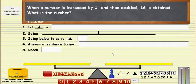When a number is increased by 1 and then doubled, 16 is obtained. What is the number? Let's see how we would solve this using the hands-on equations interactive whiteboard.